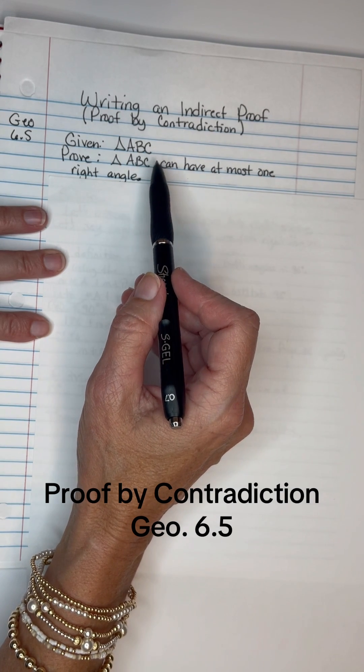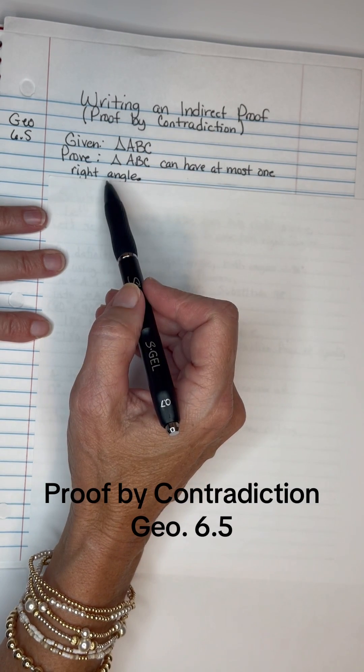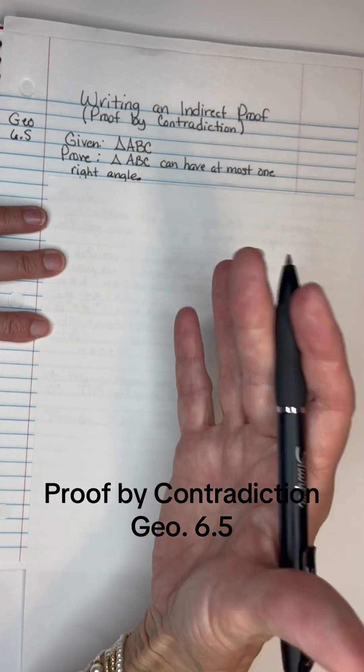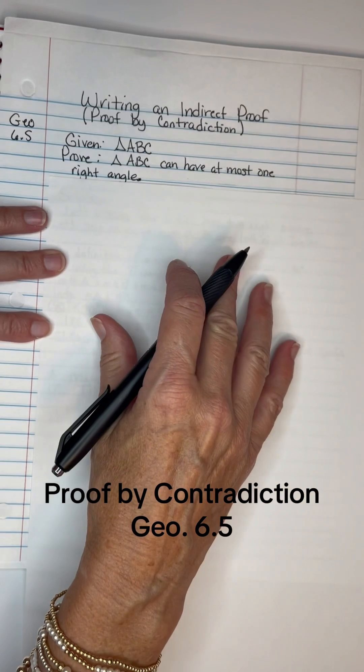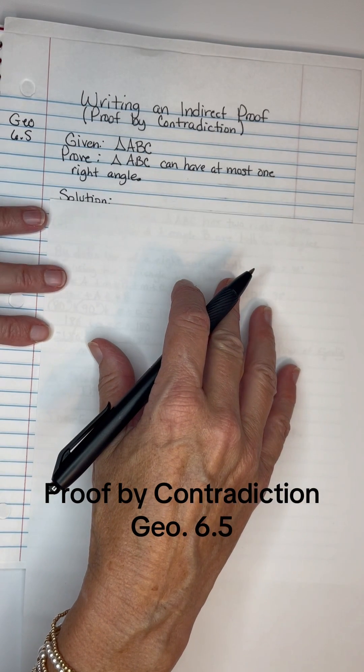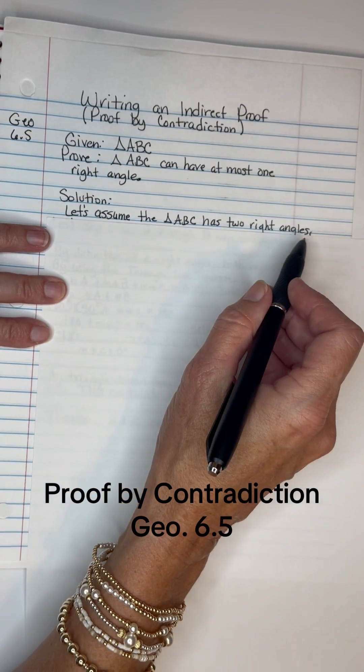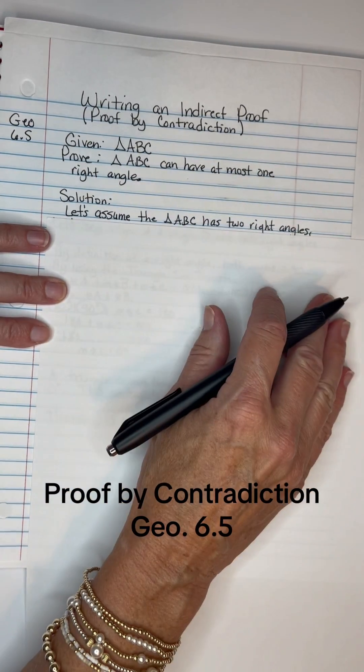Instead of saying that it can have at most one right angle, I'm gonna have to say something like it has two right angles and then work with that and prove that that's a contradiction. So I'm gonna start off by saying let's assume that triangle ABC has two right angles. So that's the opposite of what we wanted to prove.